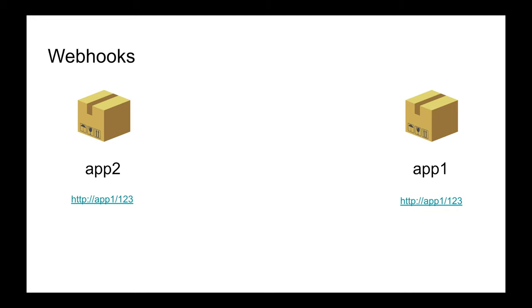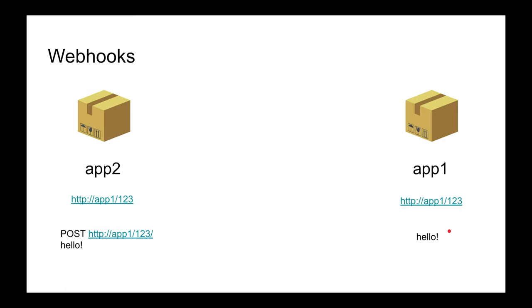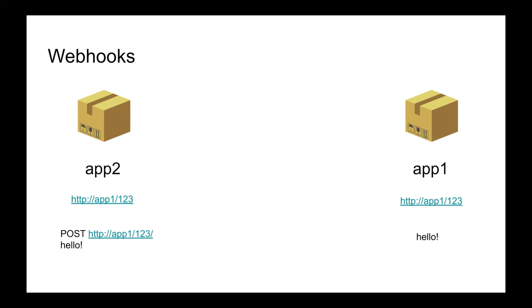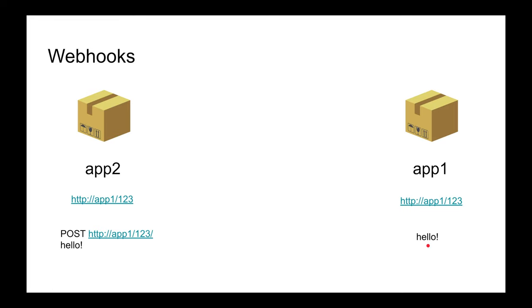The other application now has this URL, can query it and find the information it needs. When it's ready to consume the webhook, it does a POST to that URL — for example, posting a message saying 'hello.' The moment you do that, application one receives it. There is a webhook ID that identifies the call, and you can take that data and post it to a channel, upload a file, or do other things — like posting to Discord when you upload a video.